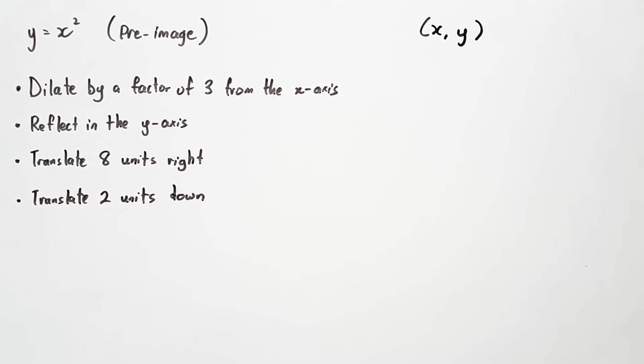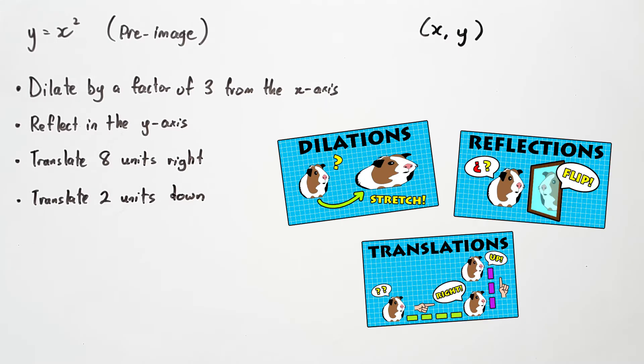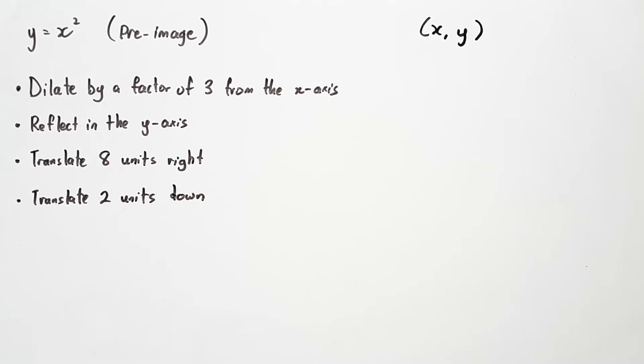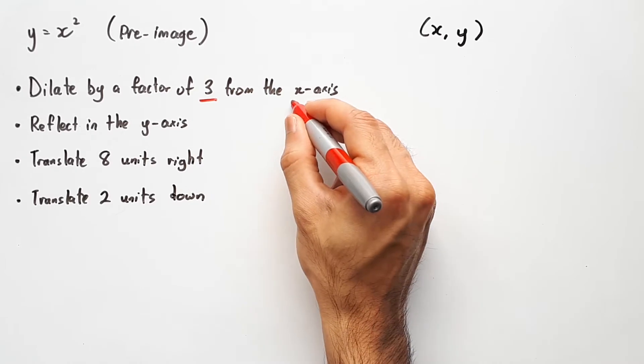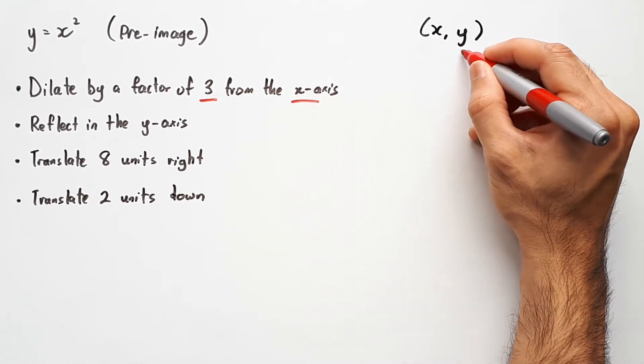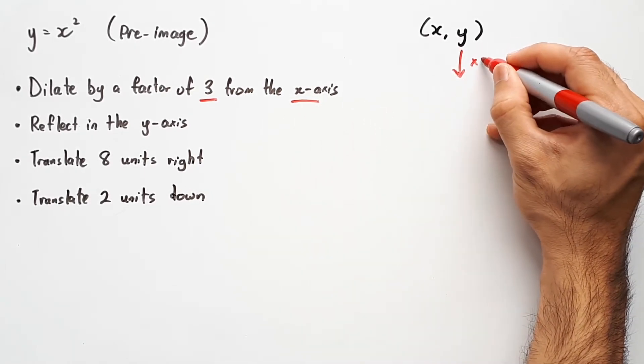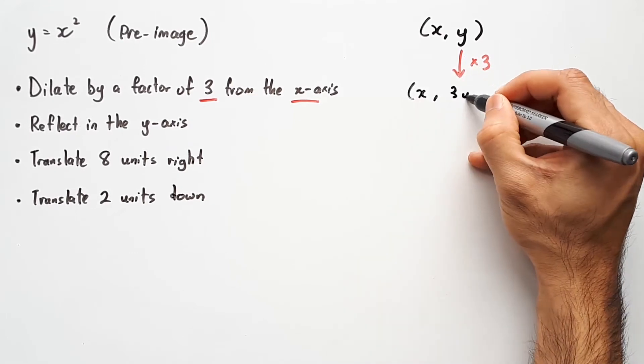The second step is to operate on this coordinate using the sequence given on the left, just like I did in my previous videos on transformations. So first we're going to dilate by a factor of 3 from the x-axis, which means we're multiplying the y-value by 3, and so you would write that as (x, 3y).